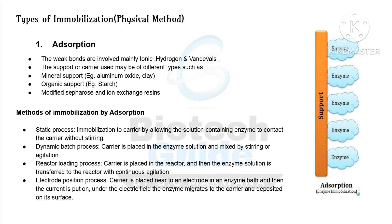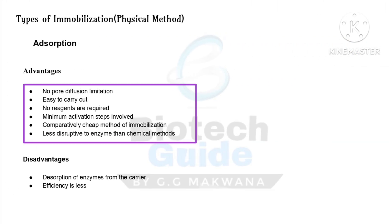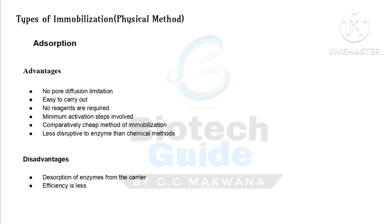In the static process, the enzyme solution contacts the carrier without stirring. In the dynamic batch process, stirring or agitation is provided. In the reactor loading process, all processes are carried out in a reactor with continuous agitation. In the electrodeposition process, the carrier is placed near an electrode in an enzyme bath; under an electric field, the enzyme migrates to the carrier and deposits on its surface. Advantages: no pore diffusion limitation, easy to carry out, no reagents required, minimum activation steps, and comparatively cheap. Disadvantages: disruption of enzymes from the carrier and lower efficiency compared to chemical methods.